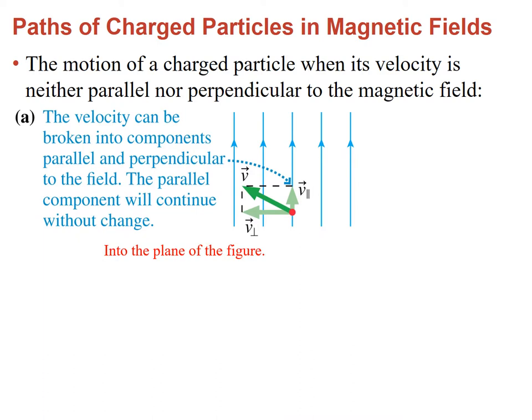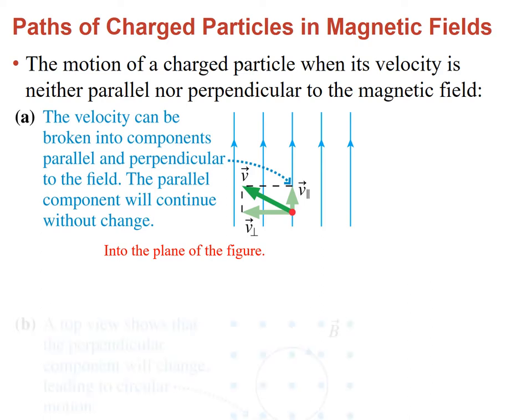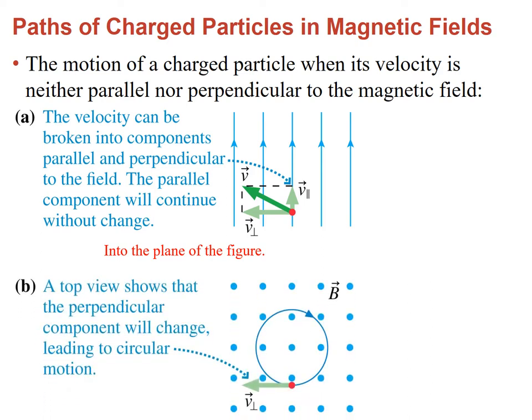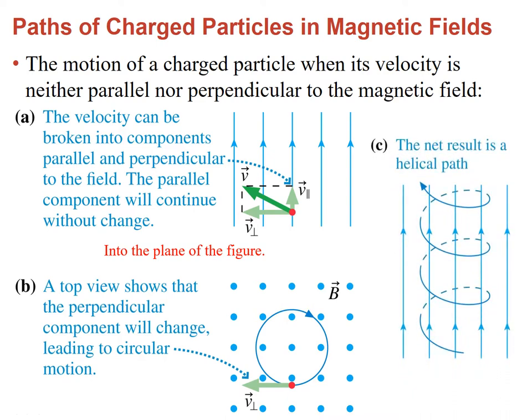In the case where the motion is not exactly at 90 degrees with respect to the field, we can end up having a helix — a helical motion. In other words, we have the same circular motion, but on top of that we have a displacement in one direction that makes it follow a helical path.